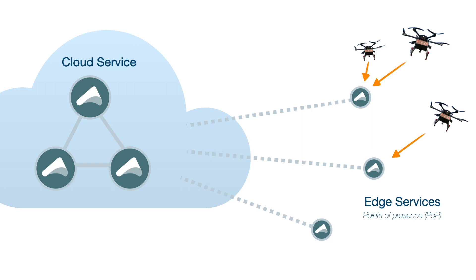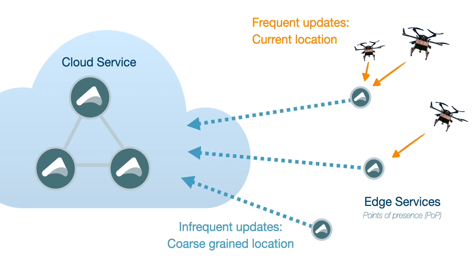Inside of the edge services, each drone is represented by a digital twin — an event-sourced entity. Whenever the drone sends a command to the edge service, it is forwarded to the entity, which can then respond or persist events corresponding to that command. The drones will frequently report their location to the edge service, so there is a lot of traffic between the drones and the geographically close edge service. Each such update is persisted in the database of the edge service. Whenever a drone moves enough to switch between coordinates in a more coarse-grained grid, a separate specific type of event is persisted.